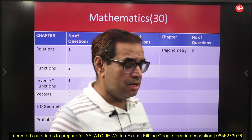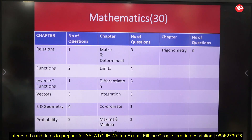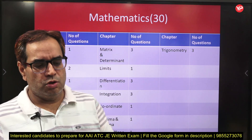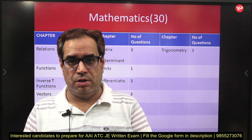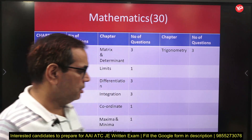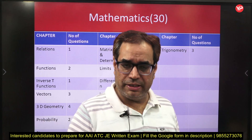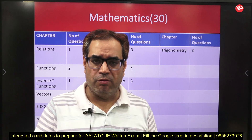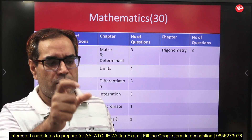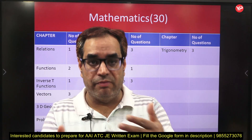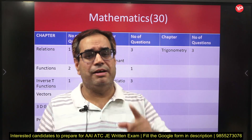Probability is also important — roughly two to three questions are asked, and in the recent 2023 paper there were two simple questions. Binary Operations, which comes in 12th standard, also gives one question always — it is a kind of function where operations are understood through a binary operation. Matrix and Determinant gives three questions on average, covering determinant calculation, solving systems of equations, matrix operations like addition, subtraction, inverse, and adjoint. Eigenvalues and eigenvectors are engineering topics and will not be asked.